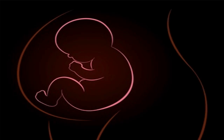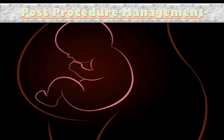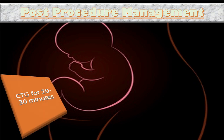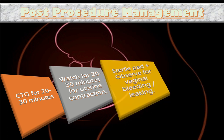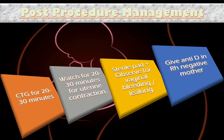Now we will talk about post-procedure management and care. Fetal condition is assessed by CTG for 20 to 30 minutes after ECV. The patient should be watched for 20 to 30 minutes for uterine contractions. Give a sterile pad and observe for vaginal bleeding or leaking. Give anti-D to the RhD negative mother. If everything goes satisfactorily, the patient can be discharged on the same day and called back after one week to re-evaluate and plan further.